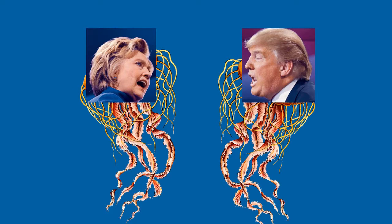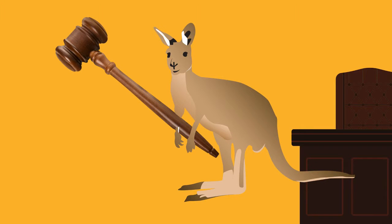J represents political science, so here we have Hillary Clinton and Donald Trump as jellyfish, stinging each other with insults during a debate. K is for law, so we have a kangaroo banging a gavel.